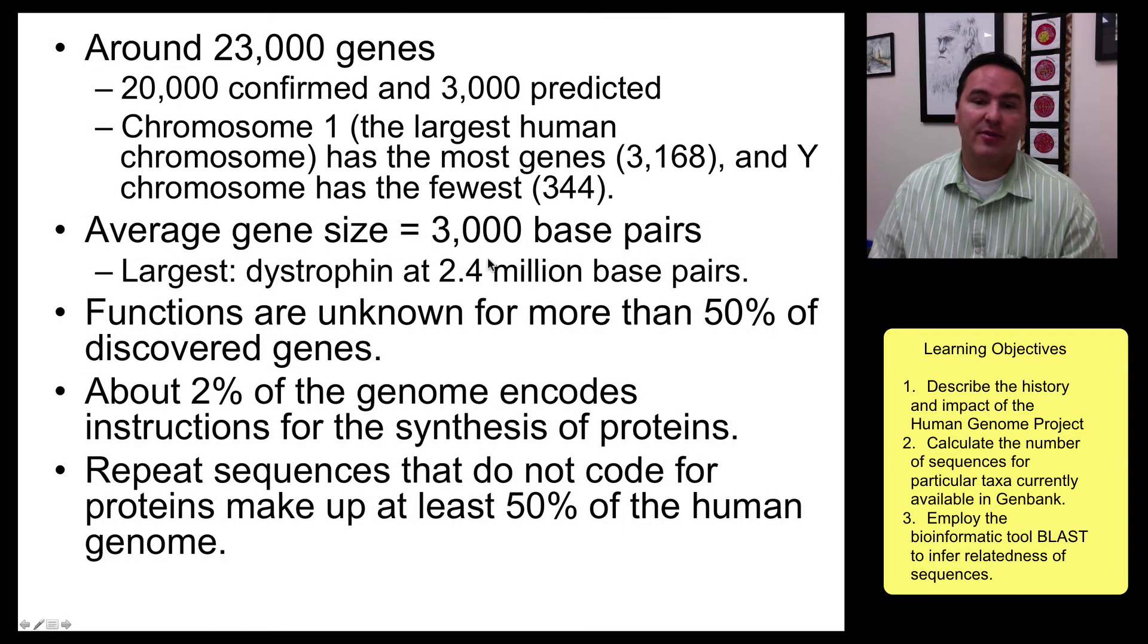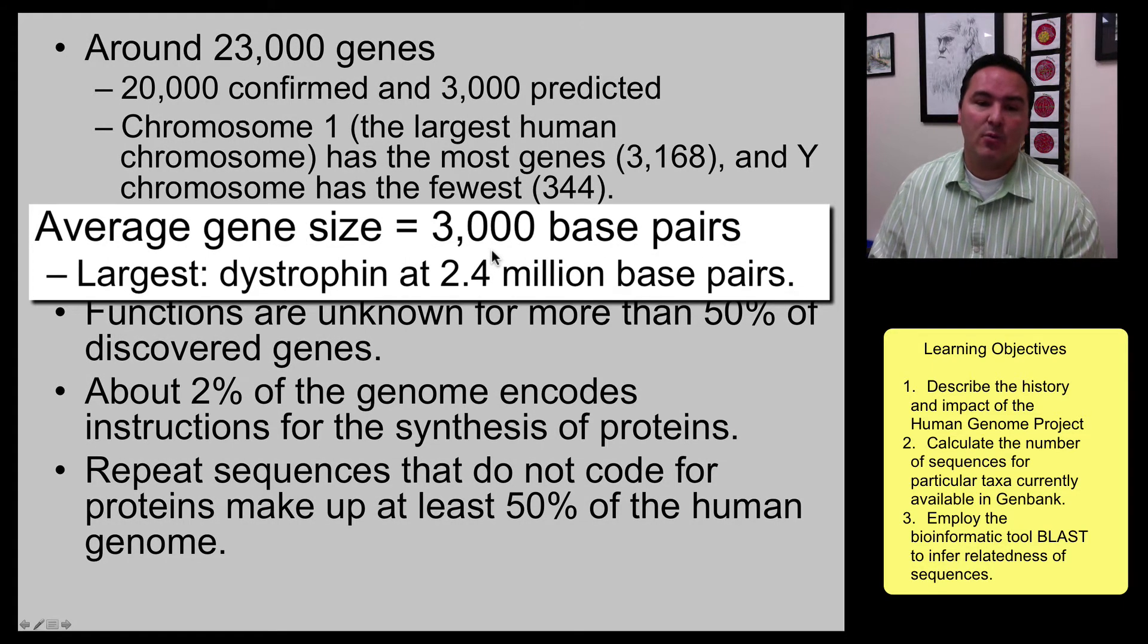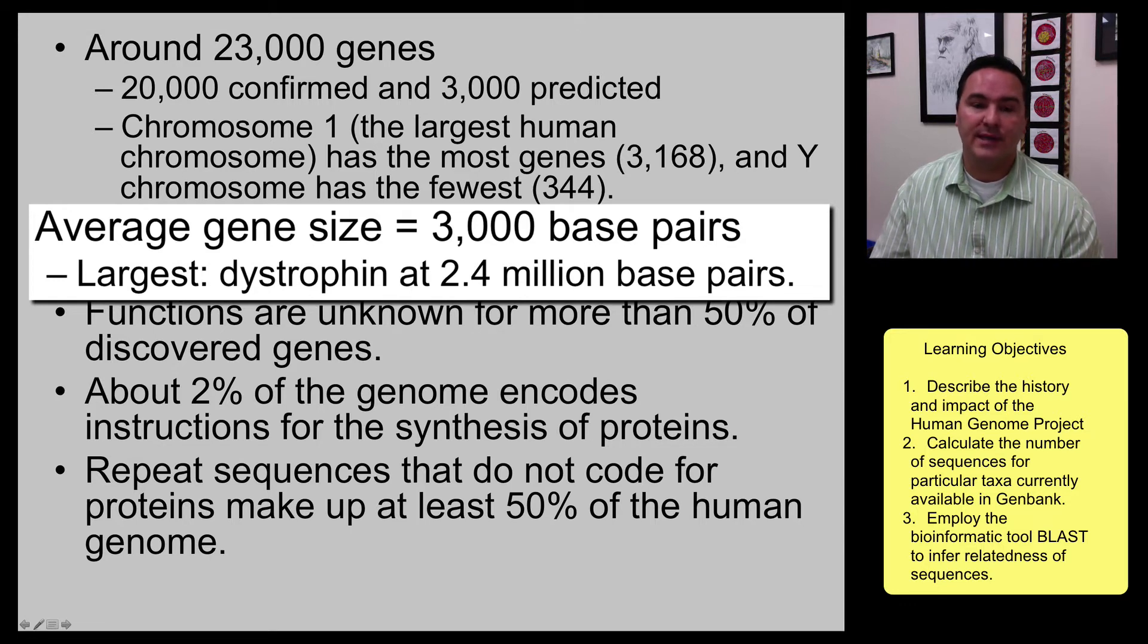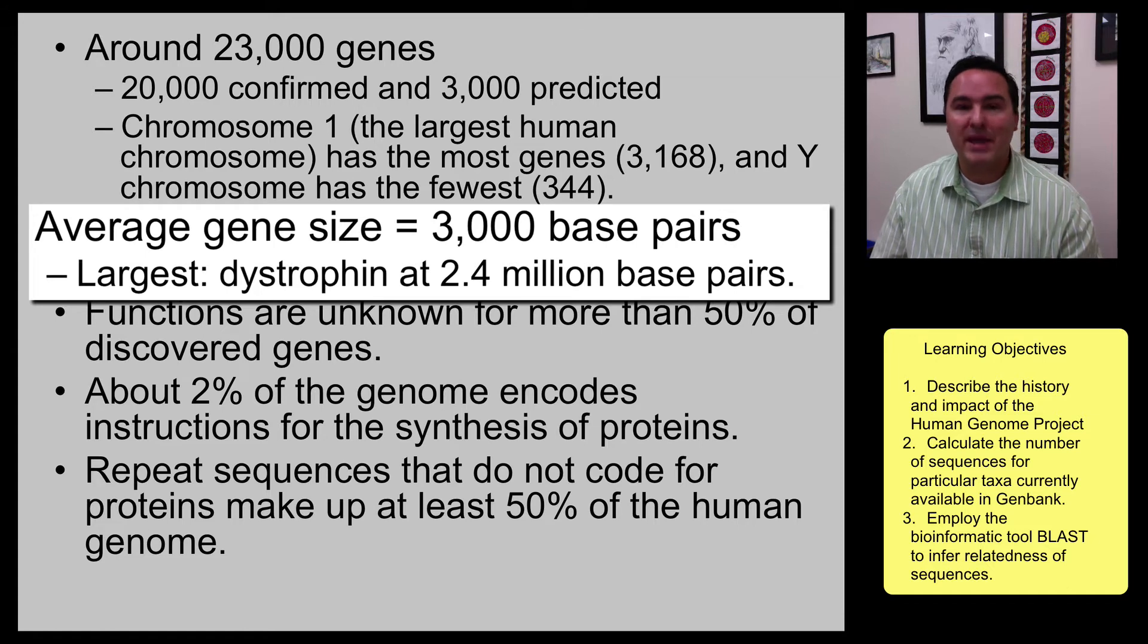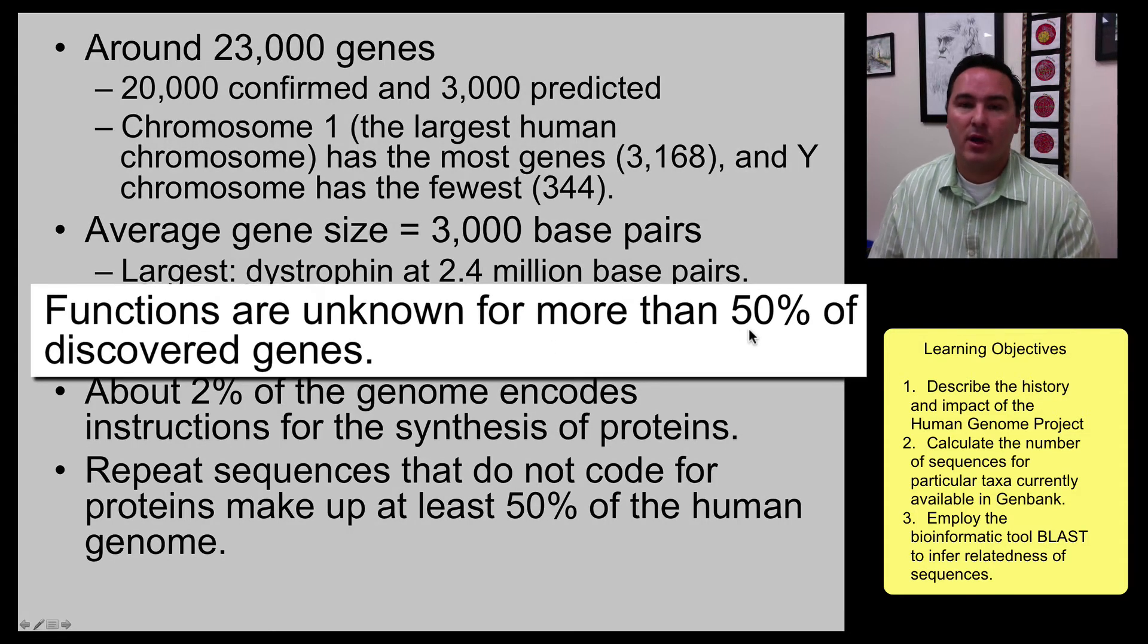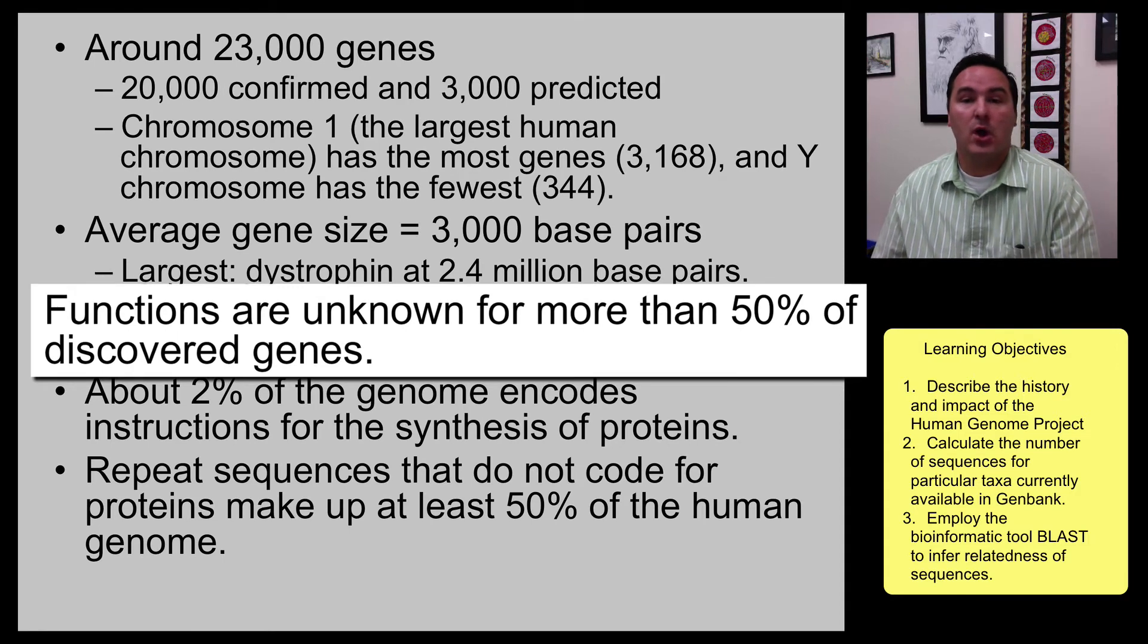The average size of a gene is about 3,000 base pairs, and that's though it varies. It can be much smaller or much larger. For example, the largest human gene is dystrophin, which is a 2.4 million base pair long gene, really, really long. For about half of the genes, we kind of know what their functions are, but for more than half of these genes, we still don't know what they do, and so this is where a lot of research is being done.